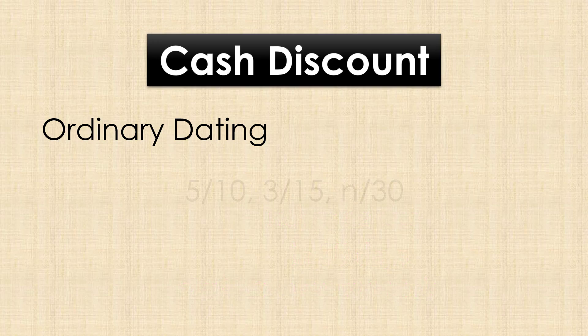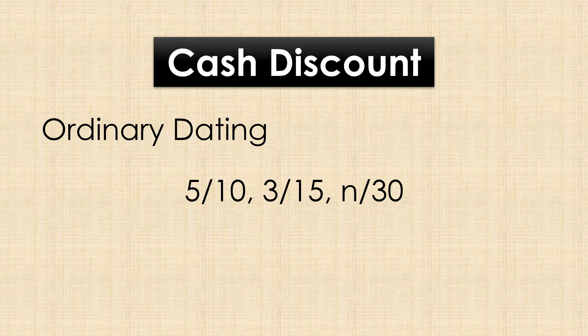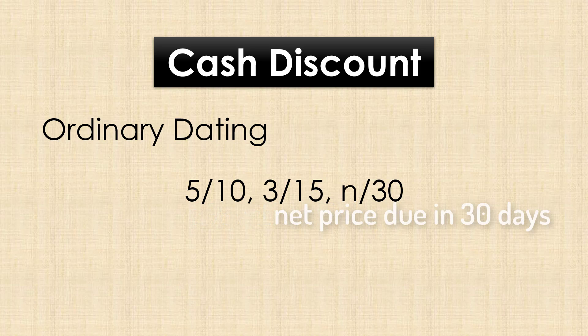Here's another example: 5/10, 3/15 net 30. This means that a 5% discount applies for payments made within the first 10 days, and a 3% discount applies to payments made after 10 days but within 15 days. Whatever amount remains unpaid after 15 days must be paid within 30 days. After 30 days, a fee or a penalty may apply.